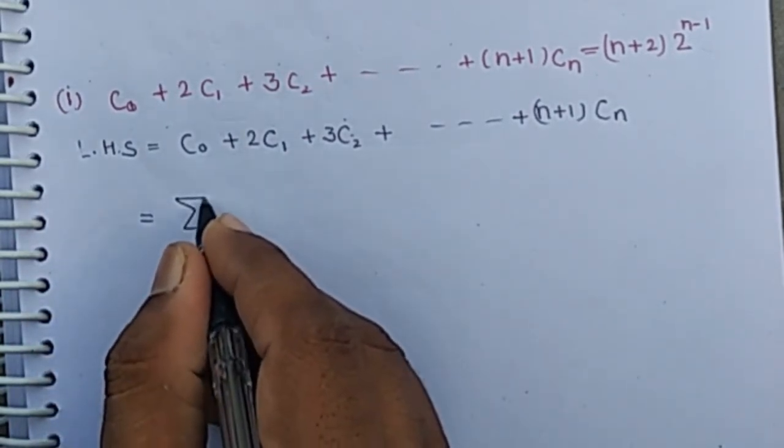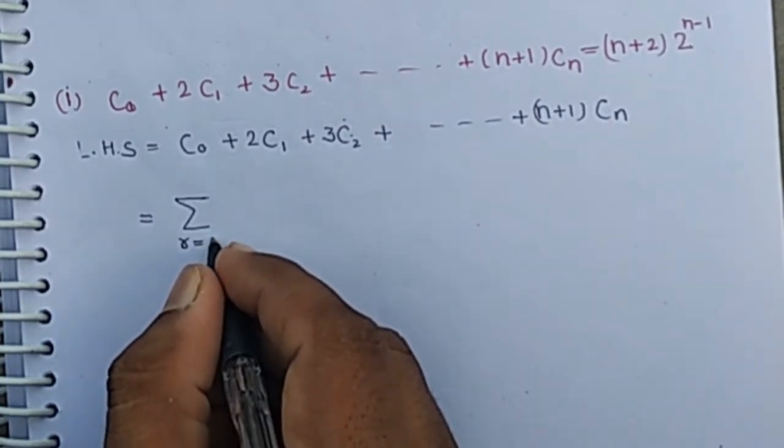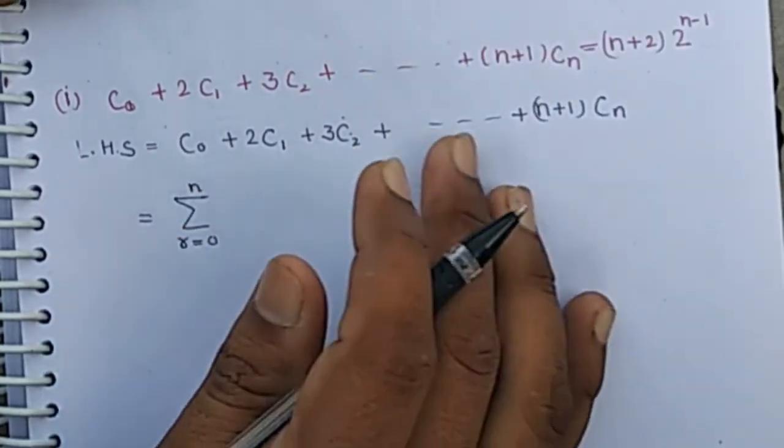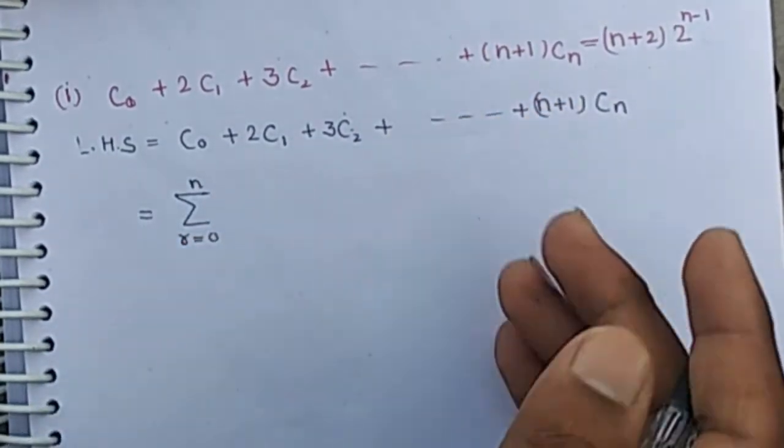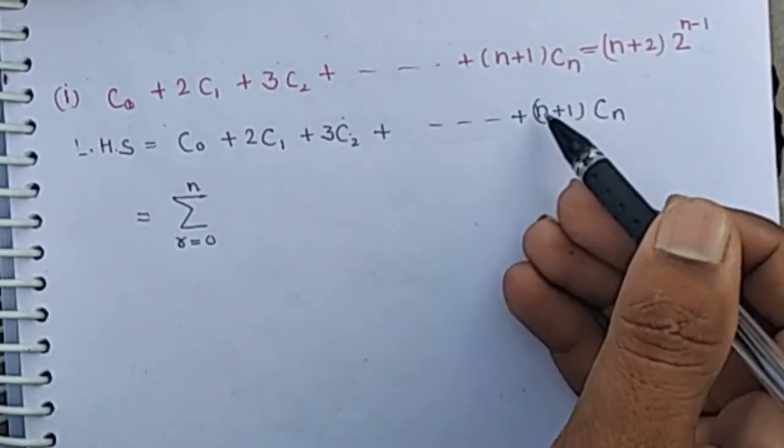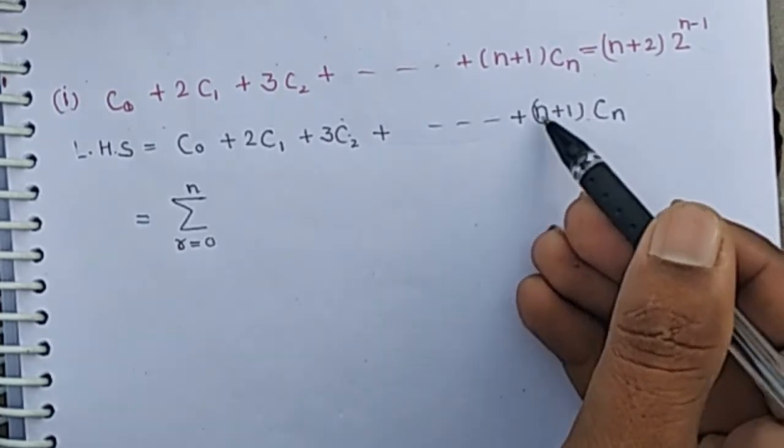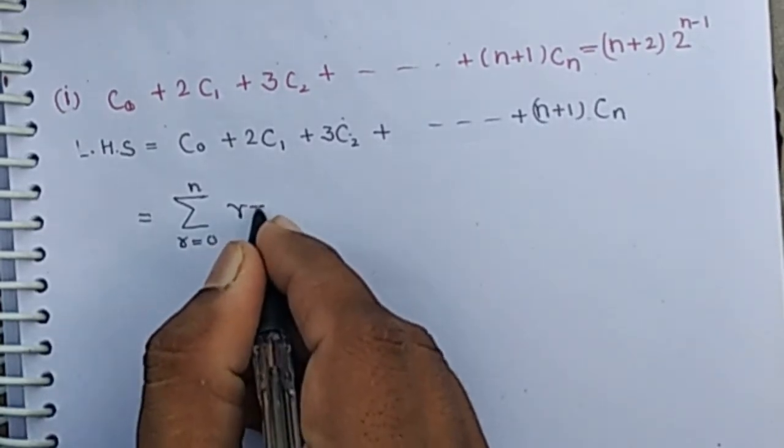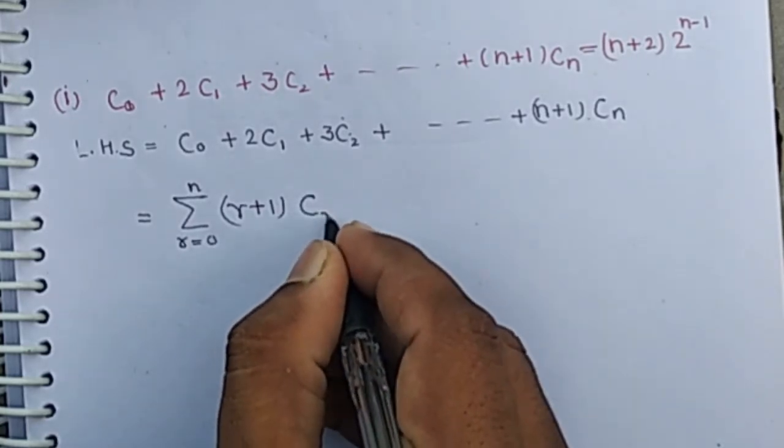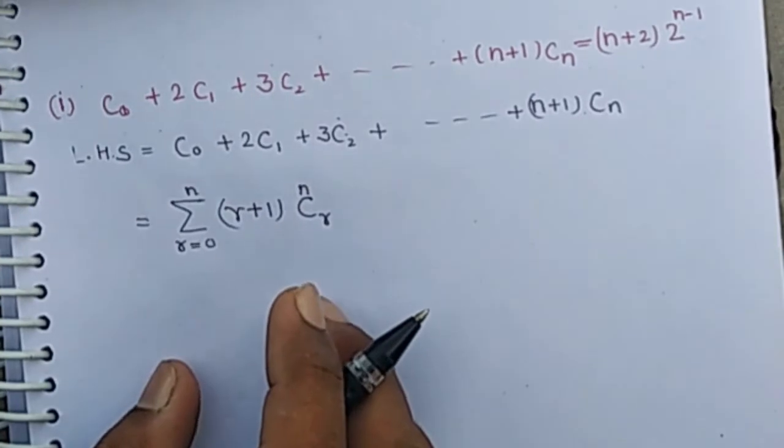When we summarize this term from r equals 0 to n, in the last term we put r in place of n, means there is r plus 1 and Cr. nCr, n is understood.